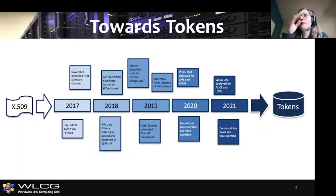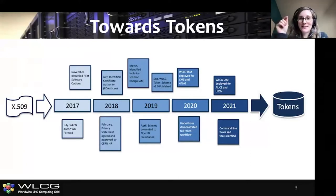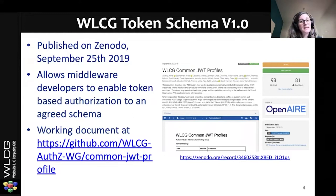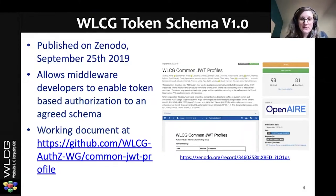We've made considerable progress — we've run pilots, identified the software we want to use, set up a token schema, and are now actually deploying the software and having people test it. The schema itself was published in 2019, and the important part is that it allows middleware developers to start enabling token-based authorization working to an agreed schema. It's available on Zenodo, and we also have a working document on GitHub. If you have comments, please raise an issue and we'll address them during our calls.